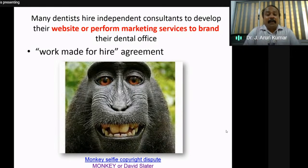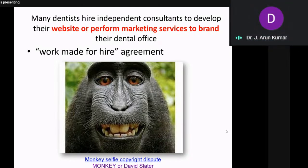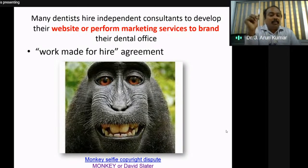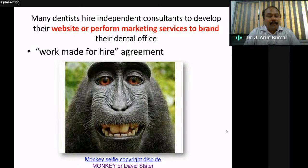An example of the importance of copyright ownership is the famous monkey selfie case. A monkey took a selfie using photographer David Slater's camera, and the dispute over who owns the copyright — David Slater or the monkey — has been ongoing. PETA has appealed on behalf of the monkey. Since the monkey took the selfie, the copyright ownership is disputed. This illustrates the strength and specificity of copyright protection.